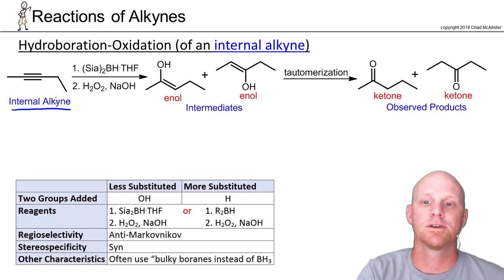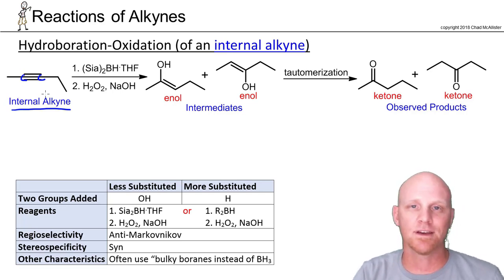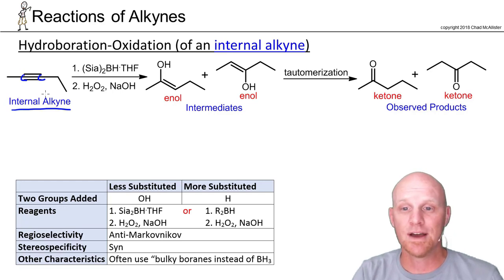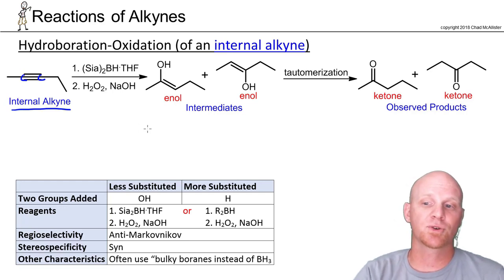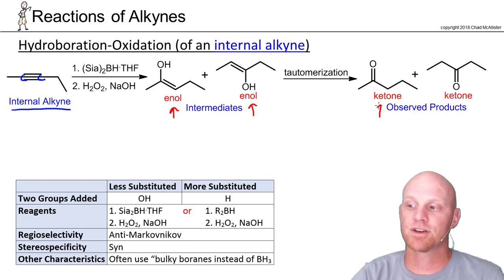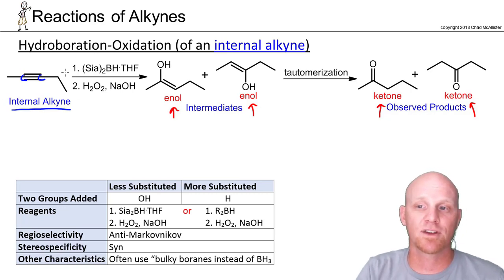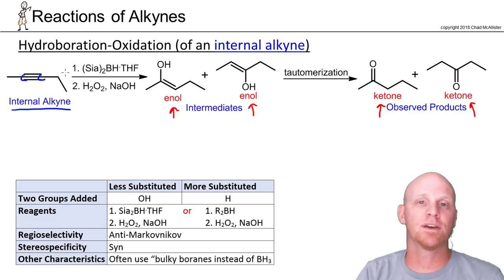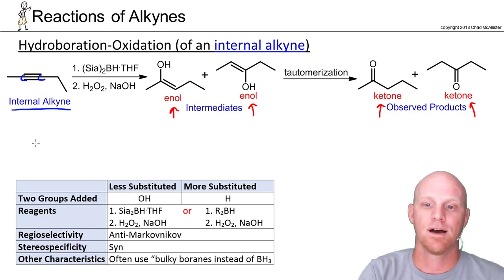Now let's look at hydroboration oxidation with an internal alkyne. With an internal alkyne, the two sp-hybridized carbons are equally substituted, so Markovnikov versus anti-Markovnikov has no relevance. Whether you use acid-catalyzed hydration or hydroboration oxidation on an internal alkyne, you get the same products either way. With an asymmetrical internal alkyne, you get two different enol intermediates — regioisomers — that tautomerize to two different ketone products.